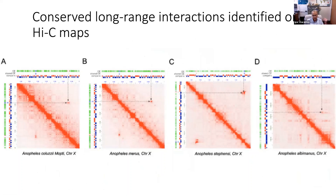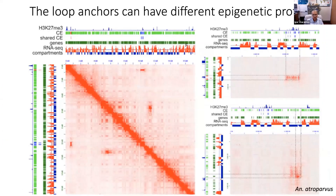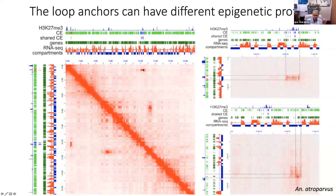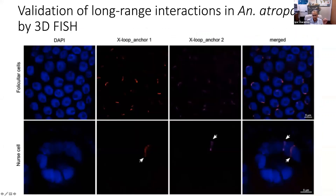In addition, we found one interesting feature: conserved long-range interactions within chromosomes. These are quite large interactions — the largest is 31 megabases apart. These loci can interact and they are conserved. We looked at the epigenetic profiles; some of them have H3K27me3 marks but some don't, suggesting different natures of those interactions. We confirmed that they indeed interact by 3D FISH.